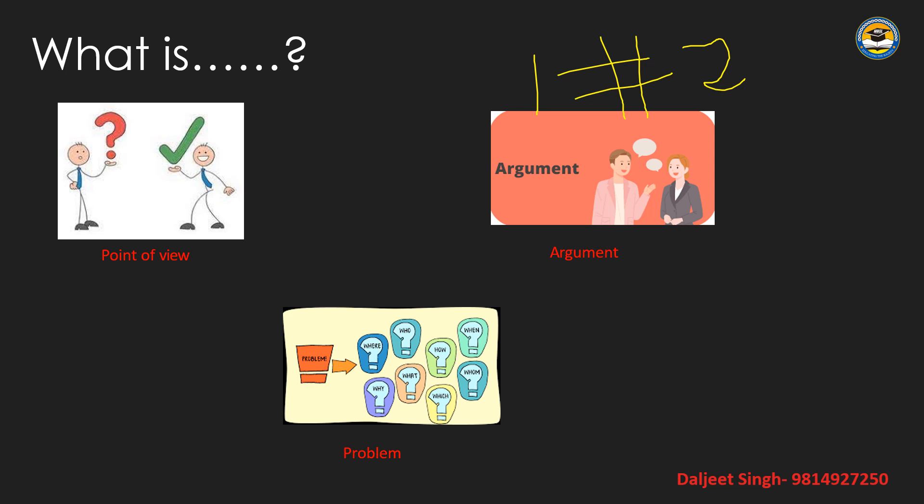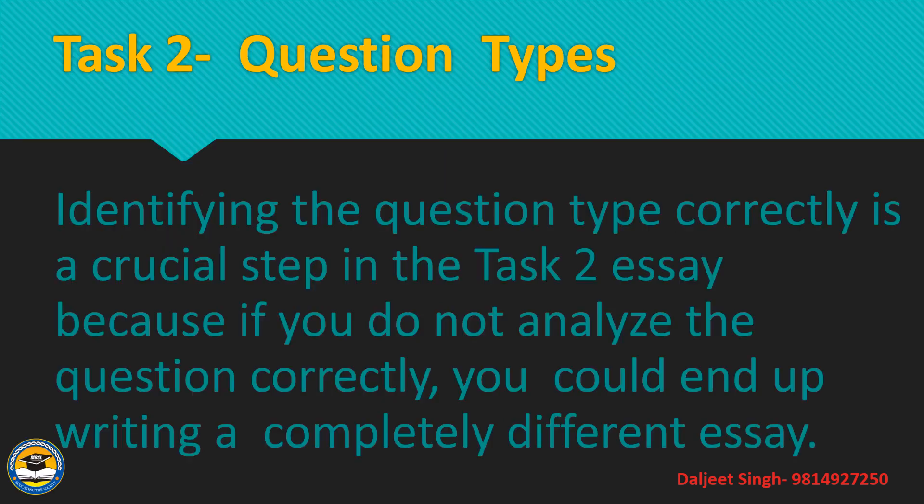तो point of view किसी personal बंदे की अपनी opinion होती है। Argument तब होता है जब दो बंदे अपनी different opinions को लेकर बहस करते हैं। और problem किसी तरह की मुसीबत है — जब आप किसी चीज़ को prefer या welcome नहीं करते, उसे problem बोल देते हैं।